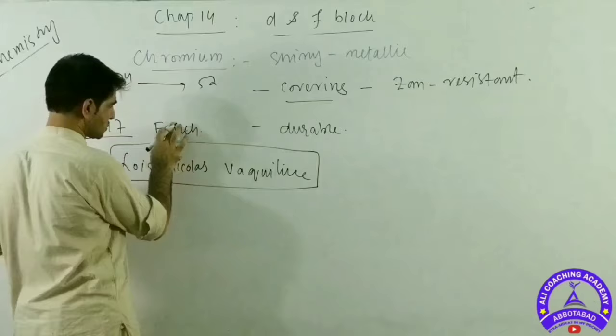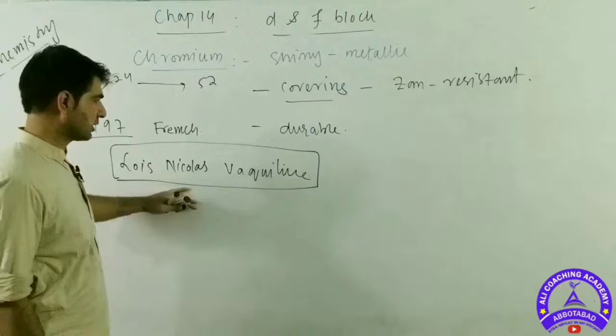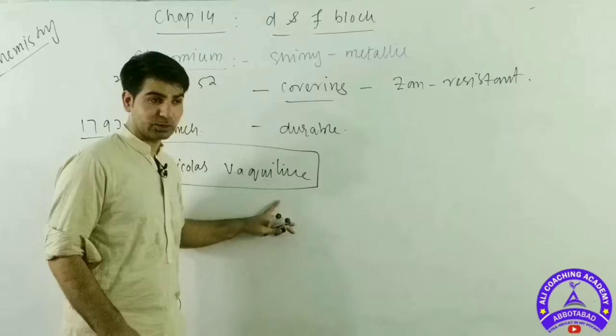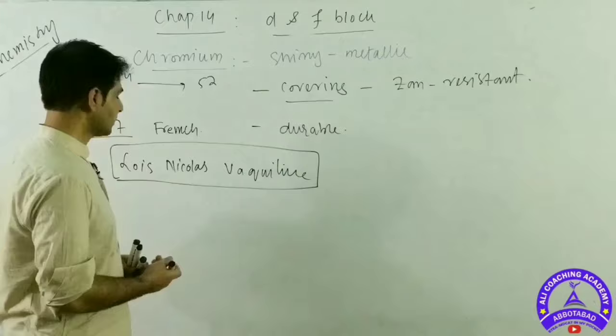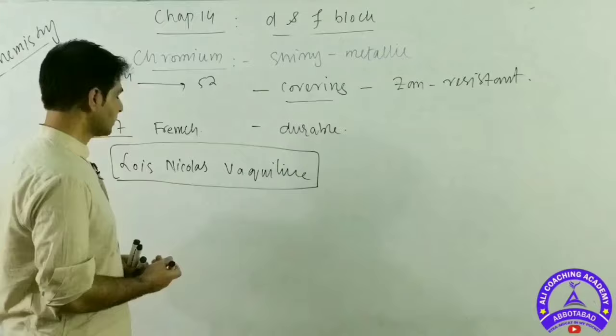Louis Nicholas Vauquelin. Vauquelin we can't remember, Chromium can't relate, so Vauquelin was in 1797 in France. He discovered it and it was named Chromium. Chromium is actually from which? Chroma. Chroma means color.